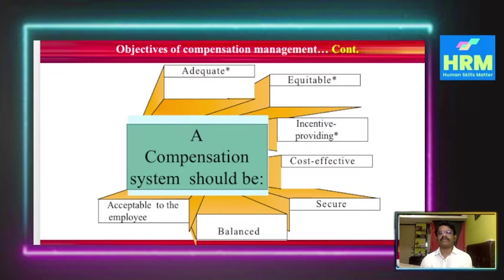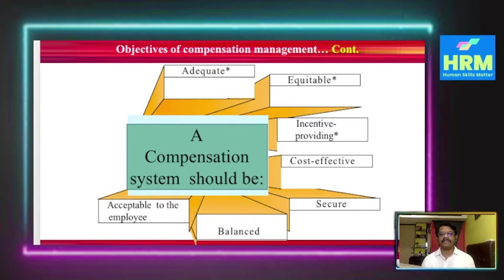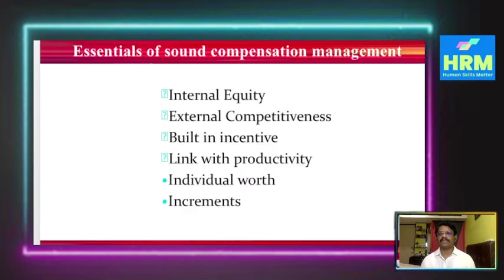The objectives of compensation management relate to providing adequate and equitable incentives that are cost-effective, secure, balanced, and acceptable to employees. These are the comprehensive features or objectives. Whatever we pay to employees must be adequate, equitable, incentive-providing, cost-effective, secure, balanced, and acceptable to all employees.